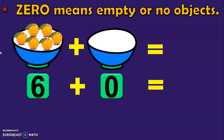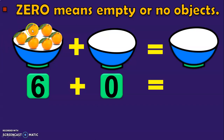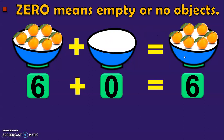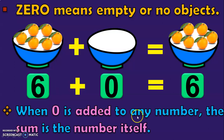What will be the total number of oranges with you now? Let us count: 1, 2, 3, 4, 5, and 6. So you will have 6 oranges with you. As 0 does not have any value, there will be no change in the sum when you add 0 to any number. This is your second property: when 0 is added to any number, the sum or the answer is the number itself. You will get the same number as the answer when you add 0 to any number.